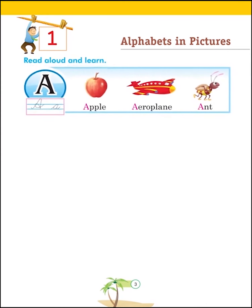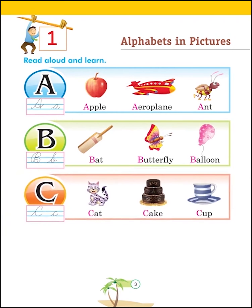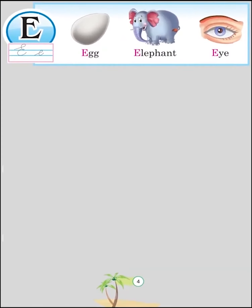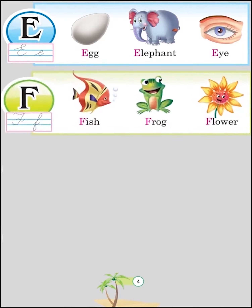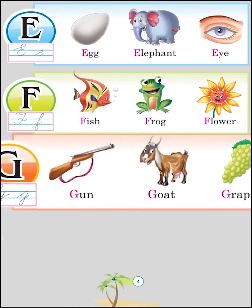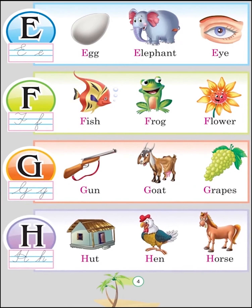A for Aunt, B for Bat, B for Butterfly, B for Balloon, C for Cat, C for Cake, C for Cup, D for Doll, D for Dog, D for Drum, E for Egg, E for Elephant, E for Eye, F for Fish, F for Frog, F for Flower, G for Gun, G for Goat, G for Grapes, H for Hut, H for Hen, H for Horse.